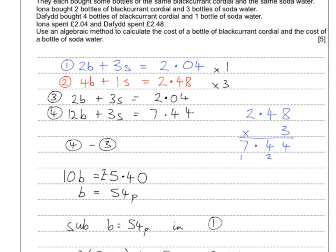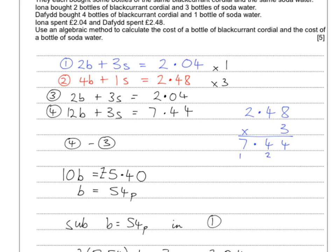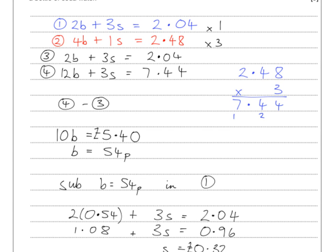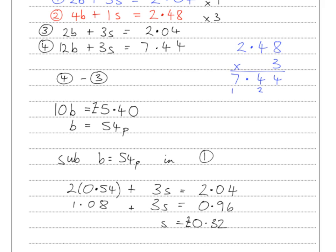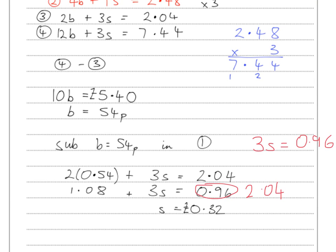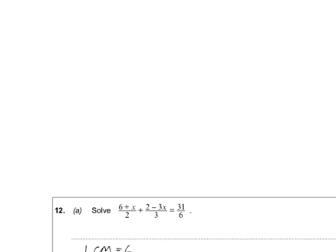Then I substituted b = 54p back into equation 1 because those numbers were smaller. Two times 54 is 108; subtracting that from 204 gives 96p for 3s, so s = 32p. I spotted a small mistake in my workings — it should still read 204 before the subtraction — but I got the correct final answer of 32p for the soda water.